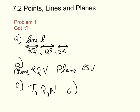Part D: what are two points that are not coplanar with points R, S, and V? Give two points that are not on the same plane as RS and V. That would be points T and N — they are not on the same plane.